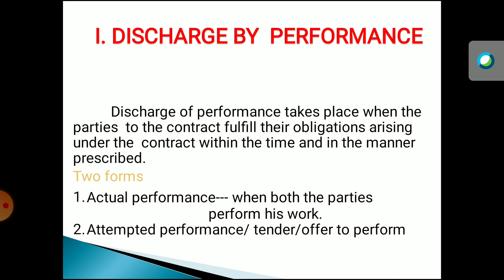Regarding discharge by performance — when both parties perform their part of obligation, fulfill their obligations, receive their rights, and perform their duties, the contract will come to an end by law itself. Such a situation in terms of law we call discharge by performance. Performance is of two types: first is actual performance and second is attempted performance. Actual performance is when both parties perform their work on time and during the course of the contract.